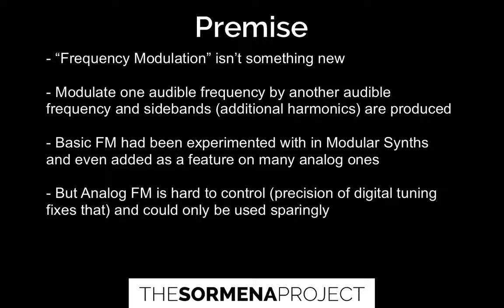Analog FM is hard to control. The precision of digital tuning fixes that with the DX7. When using analog FM, it could only be used sparingly — you had to be very careful about tuning if things started fluctuating. Luckily in that signal flow, the FM was normally occurring before the filter, so you'd still use the filter as the main tone shaper. Whereas with FM synthesis, you really don't need a filter at all if you know what you're doing.